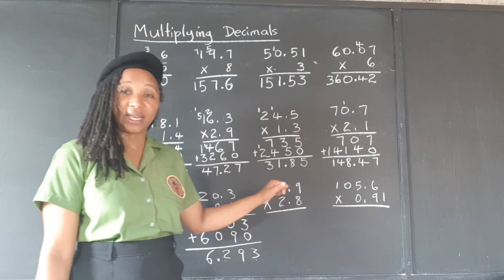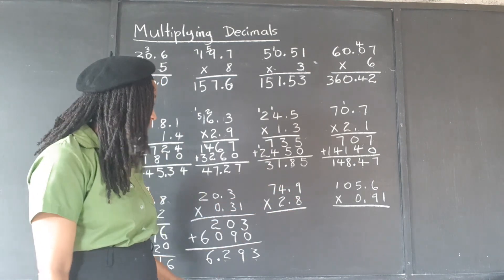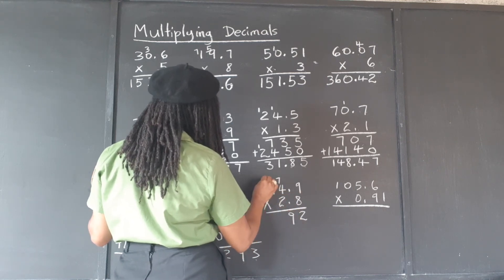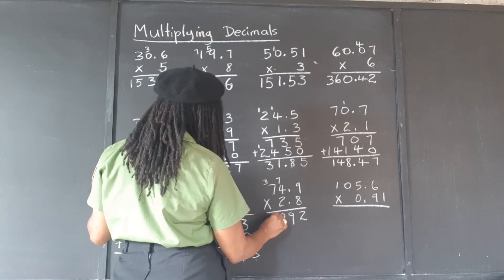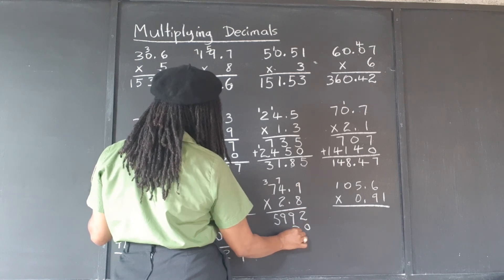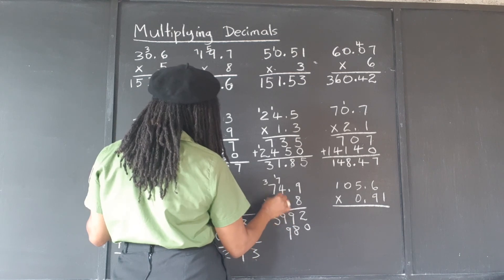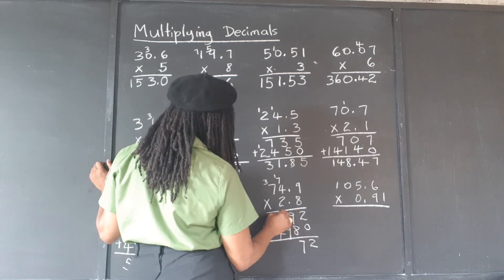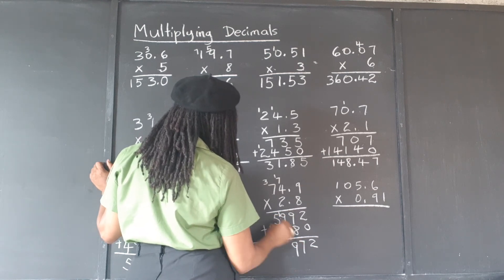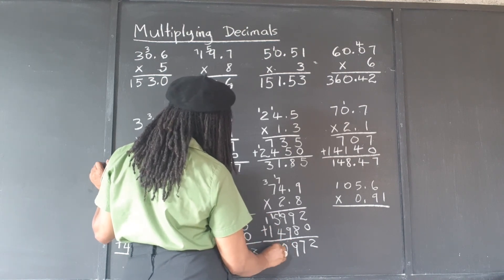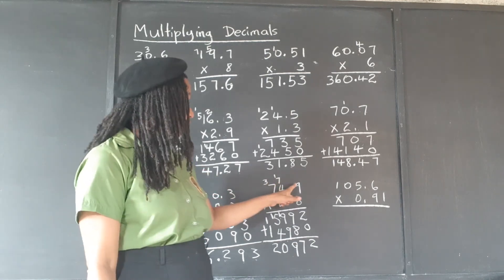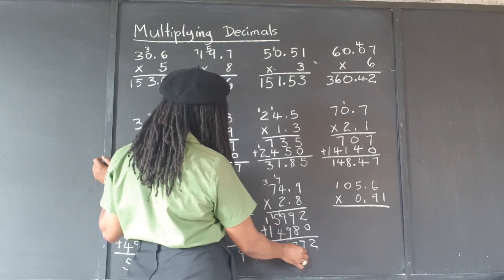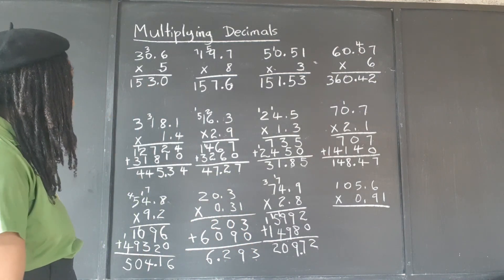We have 74.9 and we're multiplying that by 2.8. 8 times 9 is 72. 8 times 4 is 32, plus 7 is 39. 8 times 7 is 56, plus 3 is 59. With our placeholder: 2 times 9 is 18. 2 times 4 is 8, plus 1 is 9. 2 times 7 is 14. Now we add: 2 plus 0 is 2. 9 and 8 is 17, carry. 9 and 9 is 18, plus 1 is 19, carry. 5 and 4 is 9, plus 1 is 10, carry. And 1 plus 1 is 2. We have 1 plus 1, so 2 decimal places. Counting from the right: 1, 2 decimal places. So it's 209.72.